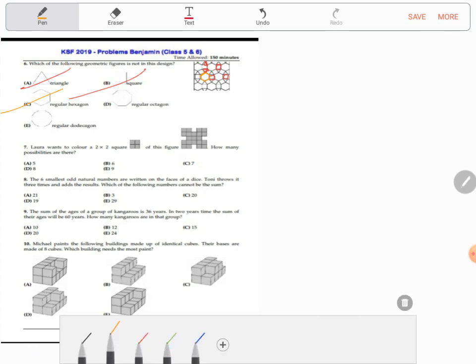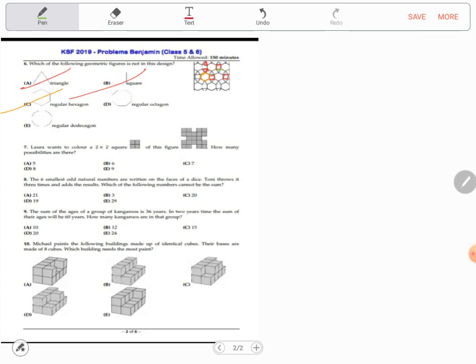Regular octagon, we do not have a regular octagon. Let's see the regular dodecagon. We have this that I'm shading with green, this is a regular dodecagon. So the correct answer becomes D, regular octagon.